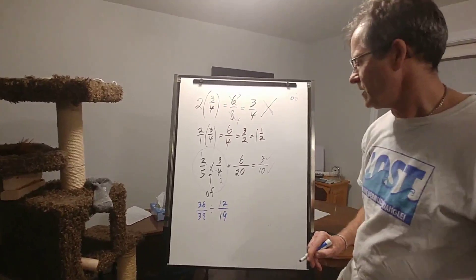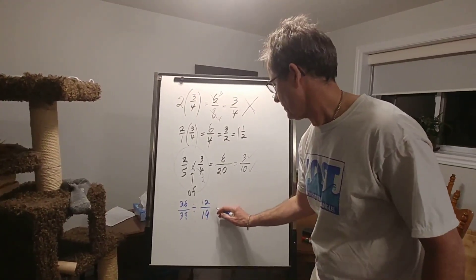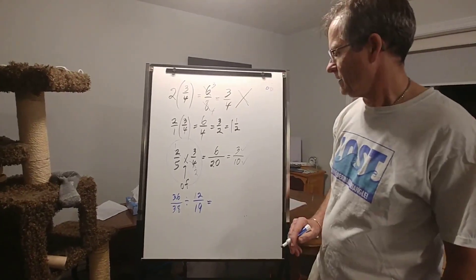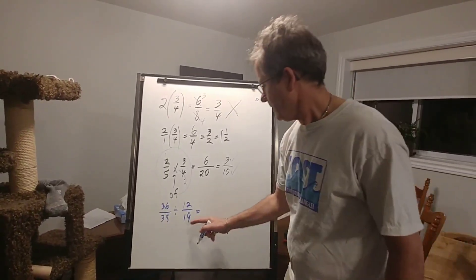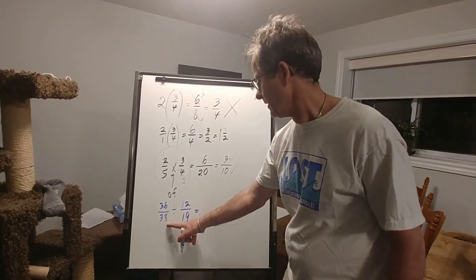Now I've chosen numbers that in this case can be reduced, but I'm not going to reduce it. How do we divide those numbers? How many of these go into that? Again, you're not going to guess that. You have to calculate it.